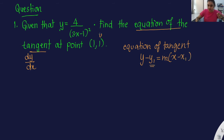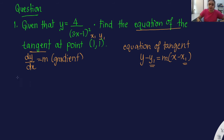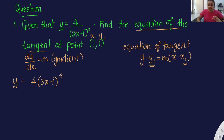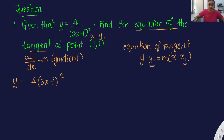The equation of tangent requires y minus y1 equals gradient times x minus x1. We have y1 and x1 from the point, so the only thing missing is m, the gradient. To find the gradient, use dy/dx. Remember when you have x in the denominator, you bring it up — so 4 over (3x minus 1) squared becomes 4 times (3x minus 1) to the power of negative 2. Since it's a bracket with a power, we use chain rule.